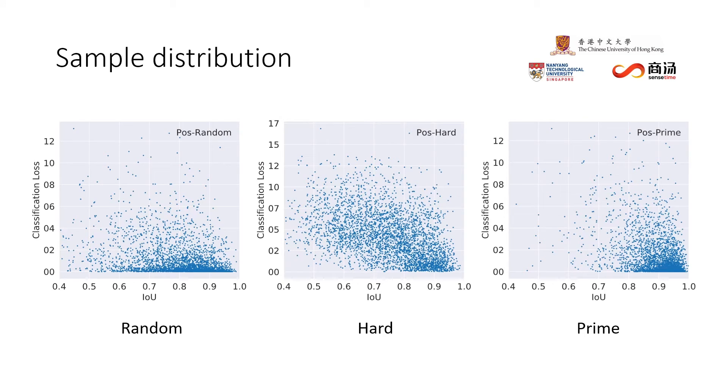We found that the sample distributions of prime and hard samples diverge from each other.